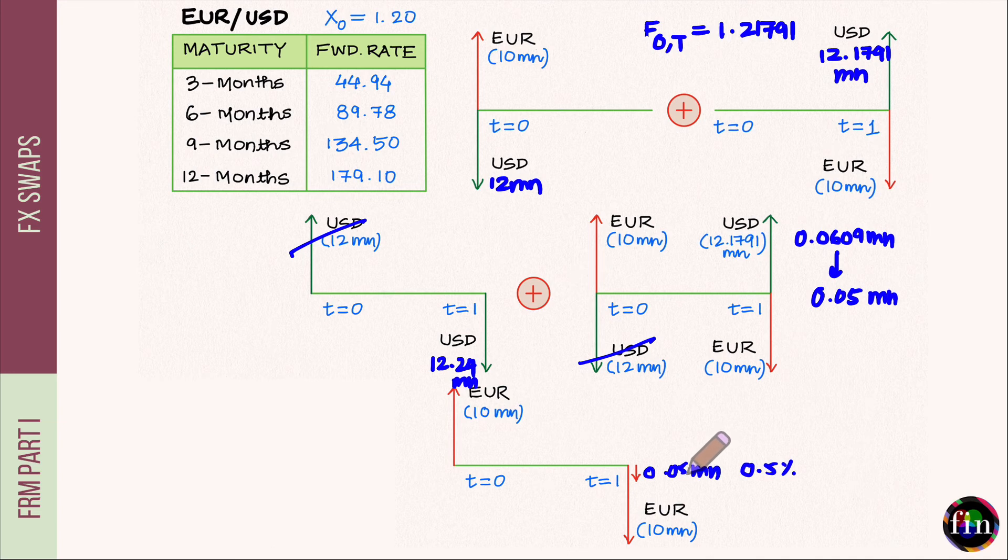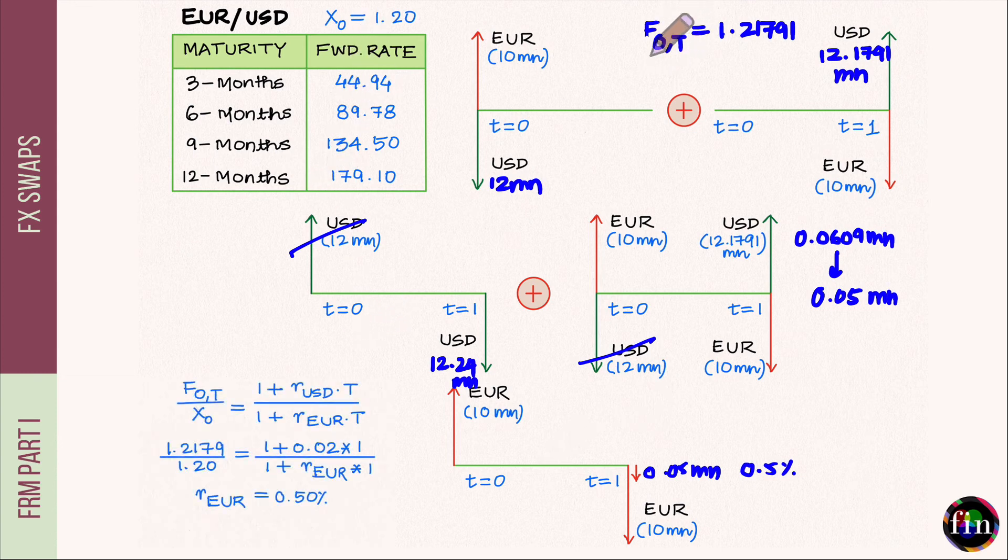Before I stop, is there anything special about this 0.5% all-in financing rate in euros that we achieved? If you take all the available data - the forward exchange rate, spot rate, and USD interest rate - and plug them into the covered interest rate parity formula, and back out the interest rate in euro, you'll observe this rate comes out to be 0.5%. The same rate we got by combining the USD borrowing with the FX swap.